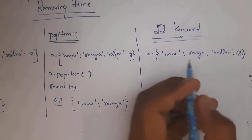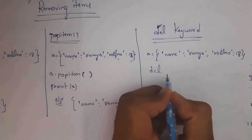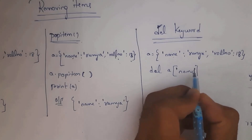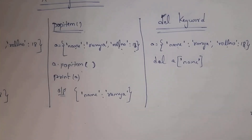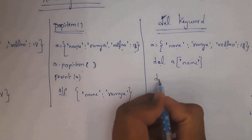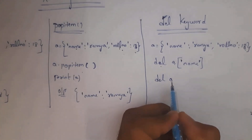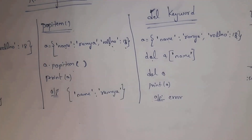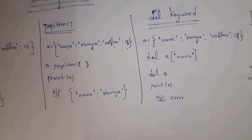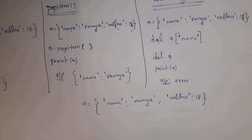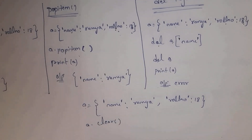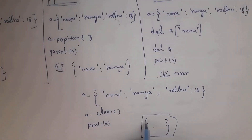The del keyword can also remove a specific item: write del a['name'] to remove 'name':'ramya', and print(a) gives {'roll_number': 18}. You can also delete the entire dictionary with del a — after that, print(a) will raise an error because the dictionary no longer exists. The clear() method removes all items from a dictionary: write a.clear(), and print(a) returns empty curly braces {}.